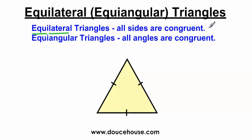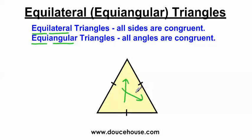Something you might not know about equilateral triangles is that they're also equiangular — equal angles. 'Equa' is equal, 'angular' is angles. So all the angles are also going to be equal to each other. Since these sides are congruent to each other, the angles opposite those sides also have to be equal to each other. So all these angles are going to be congruent as well. That's what equiangular means.